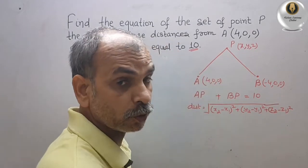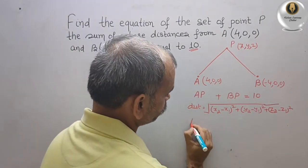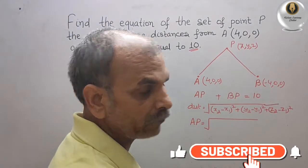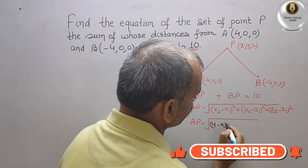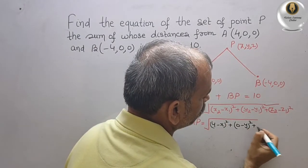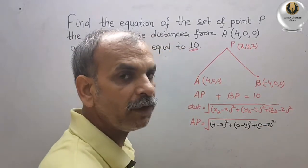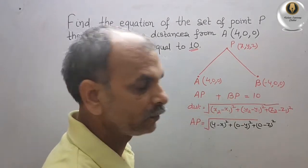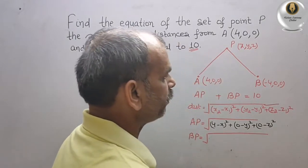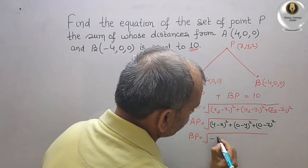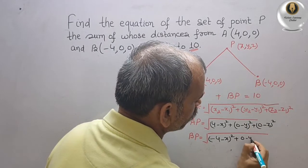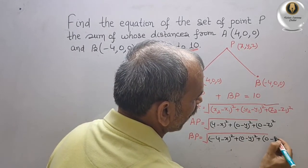So first we will find AP. AP is equal to root under (4 - x)² + (0 - y)² + (0 - z)². Now we will write BP. BP is equal to root under (-4 - x)² + (0 - y)² + (0 - z)².